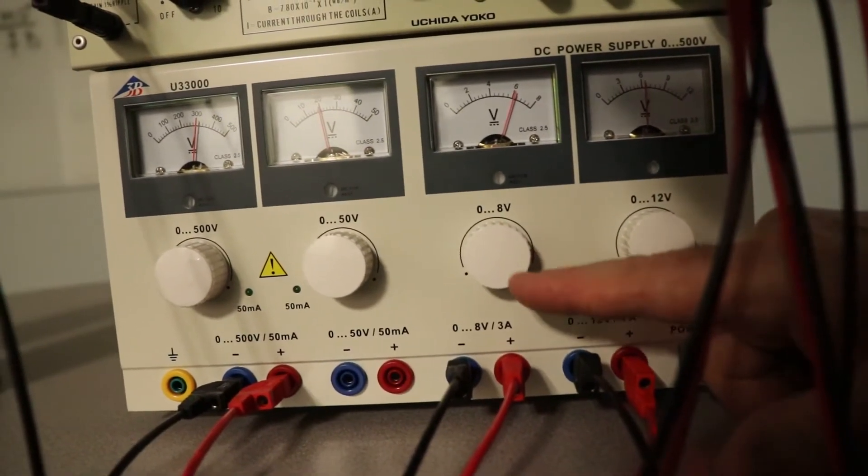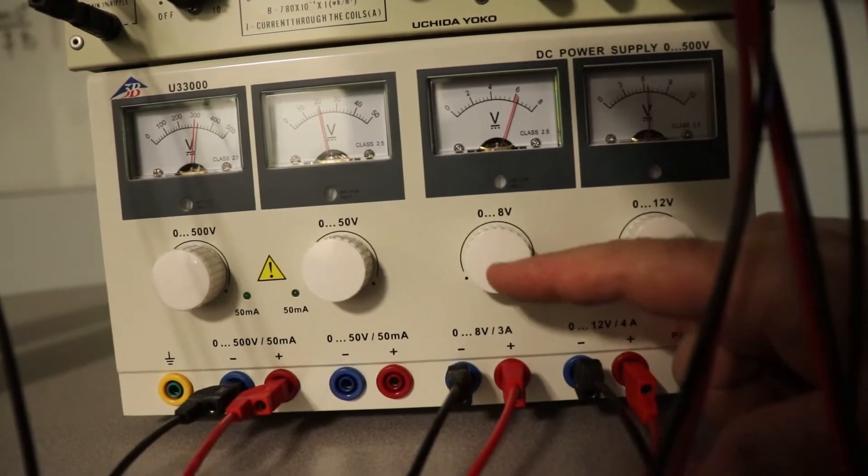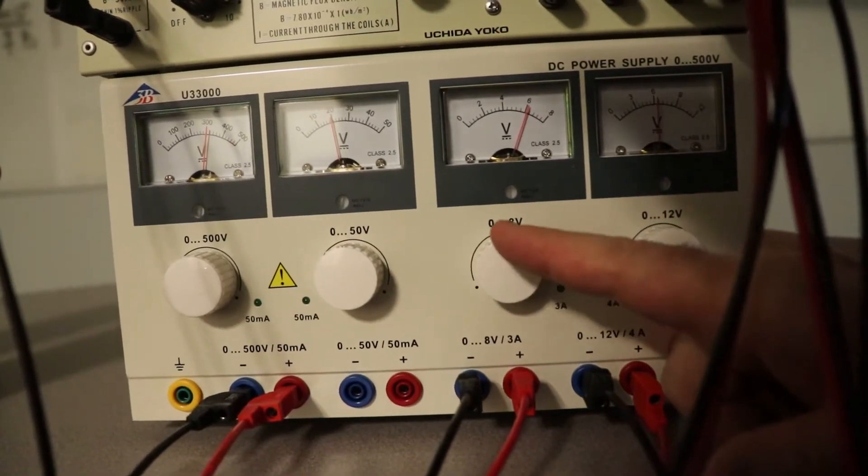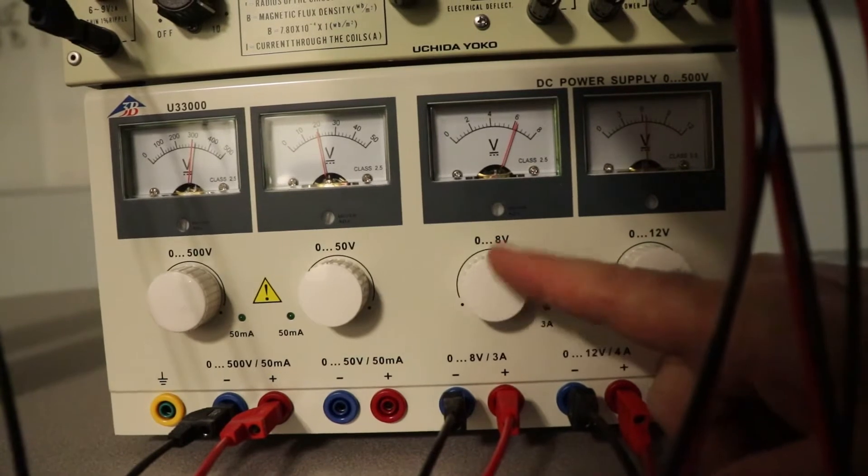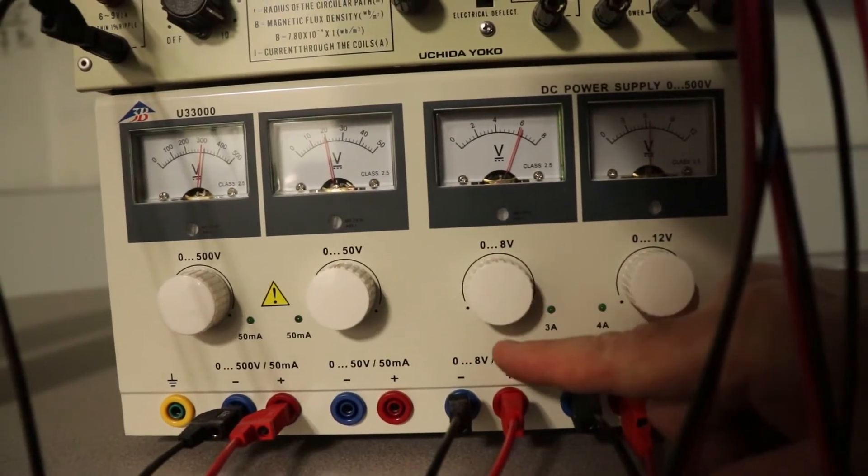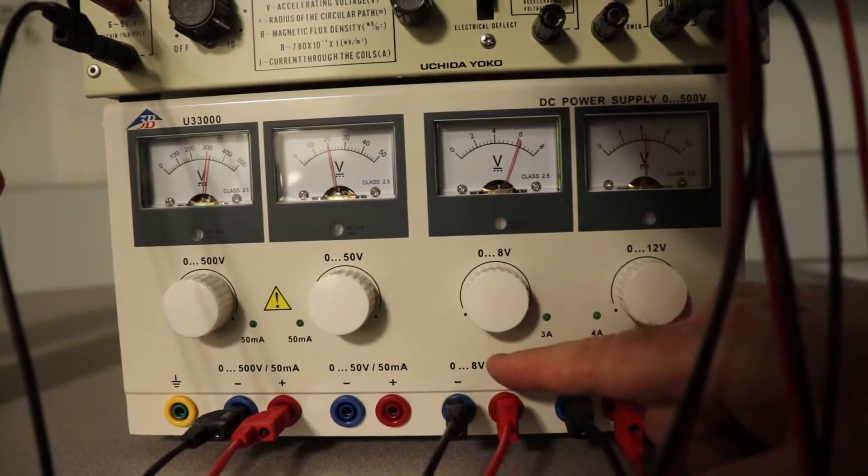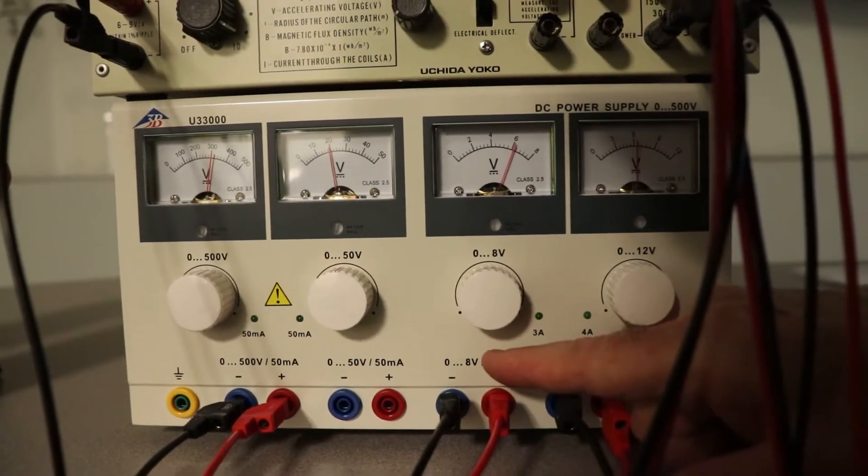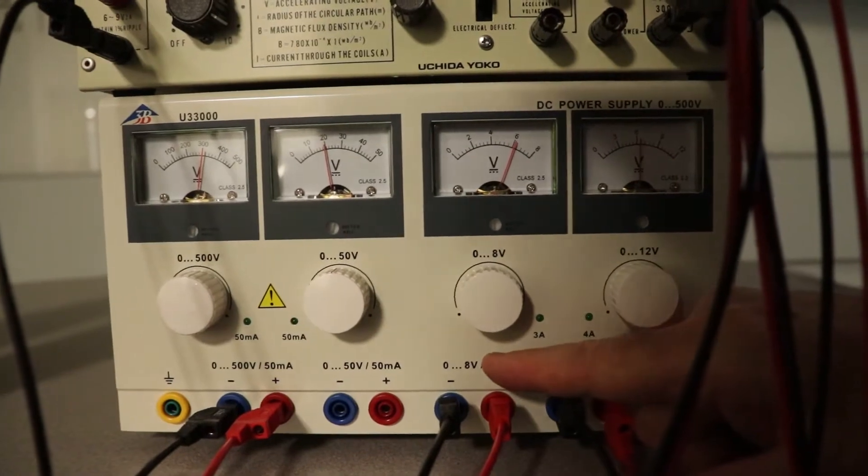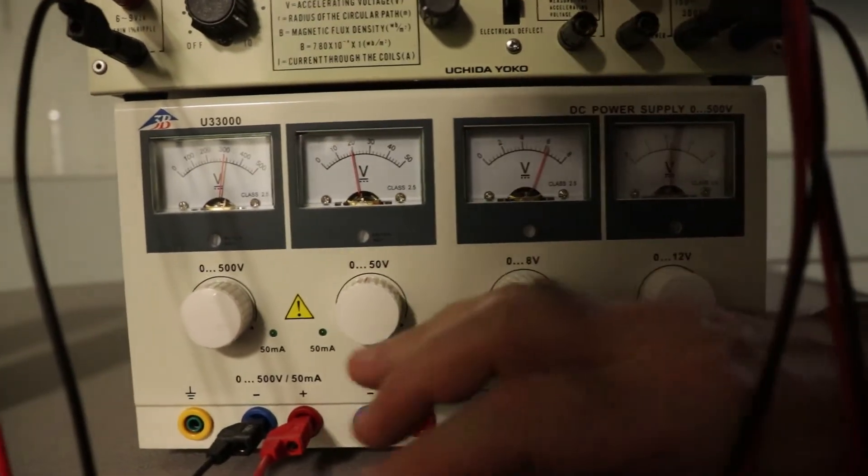The next one is the filament. This creates the swarm of electrons around that little filament, like the filament on a light bulb. And it only goes to 8 volts, but it's got 3 amps going to it. And the resistance of the filament is very low, so you get a lot of heat going on inside that filament.